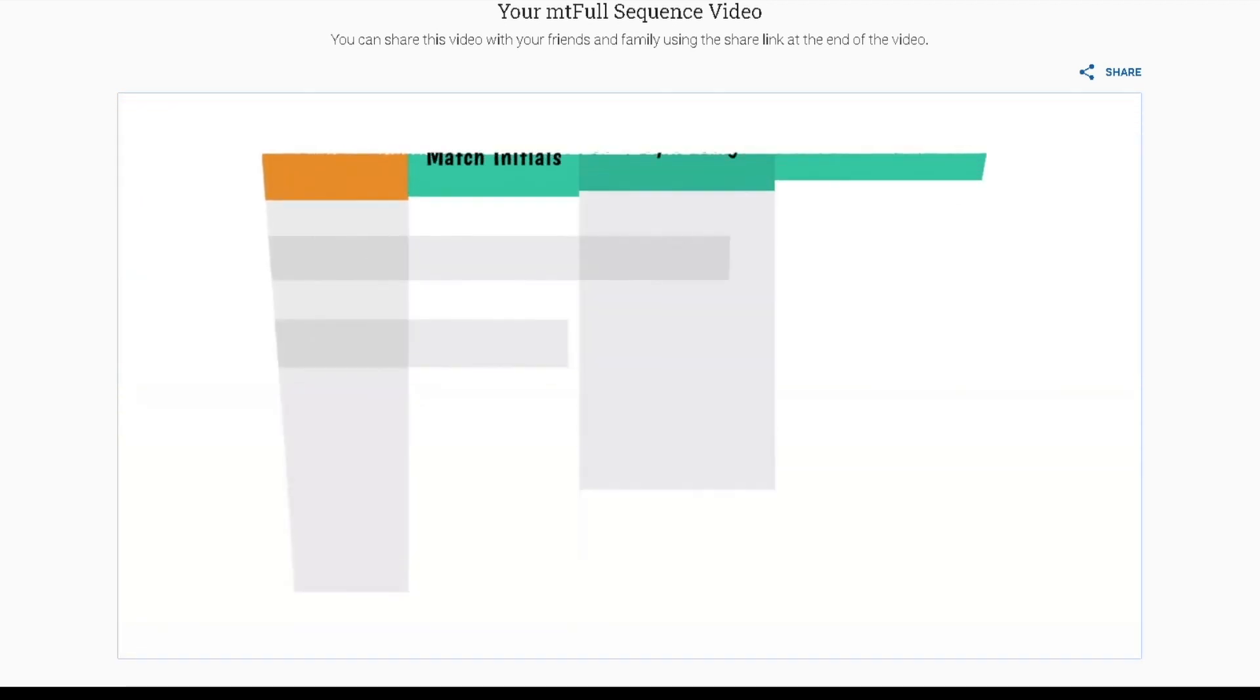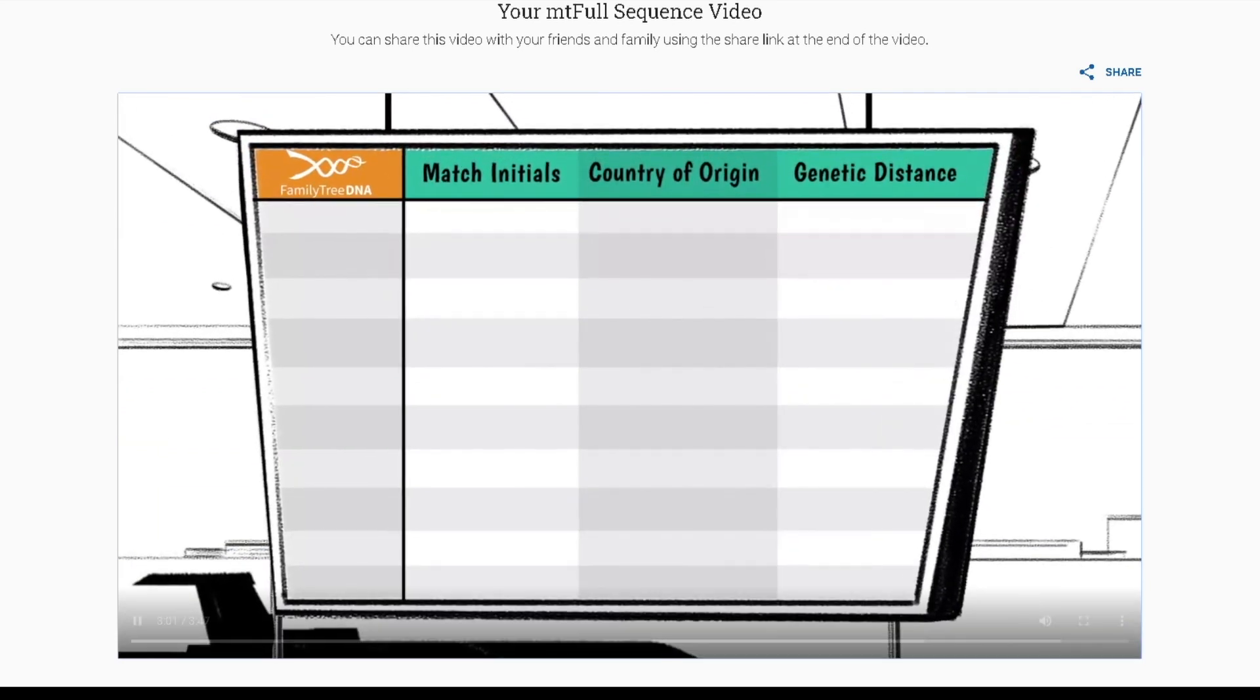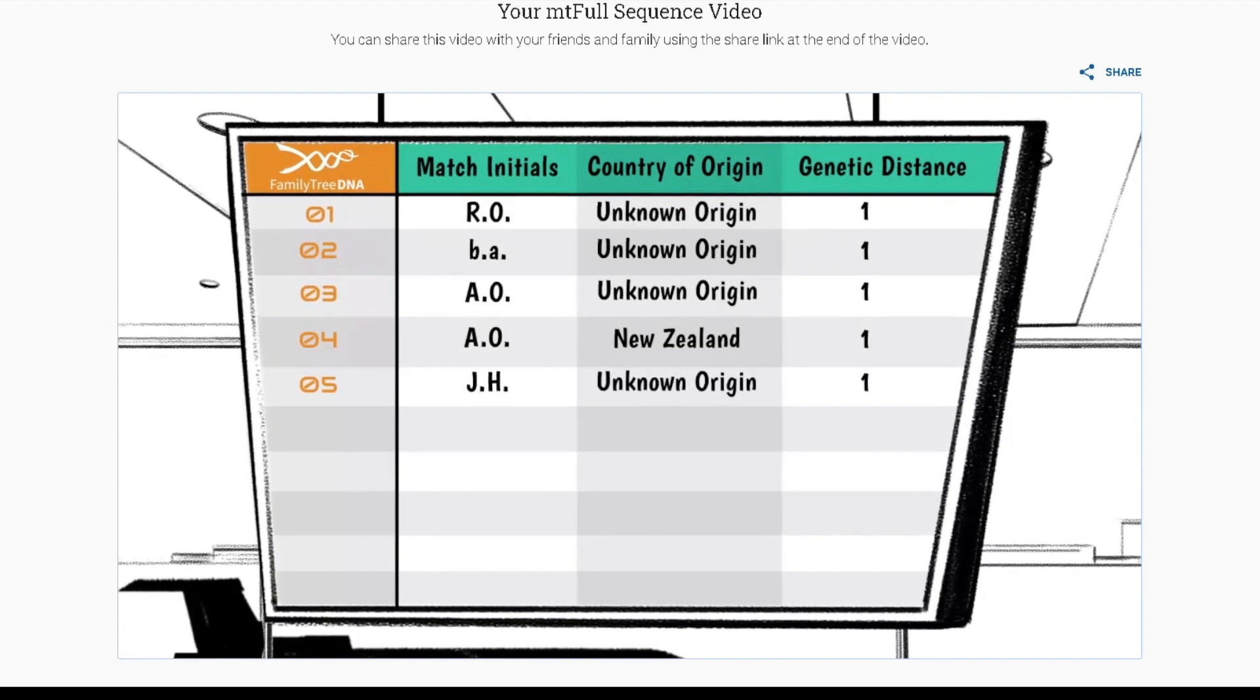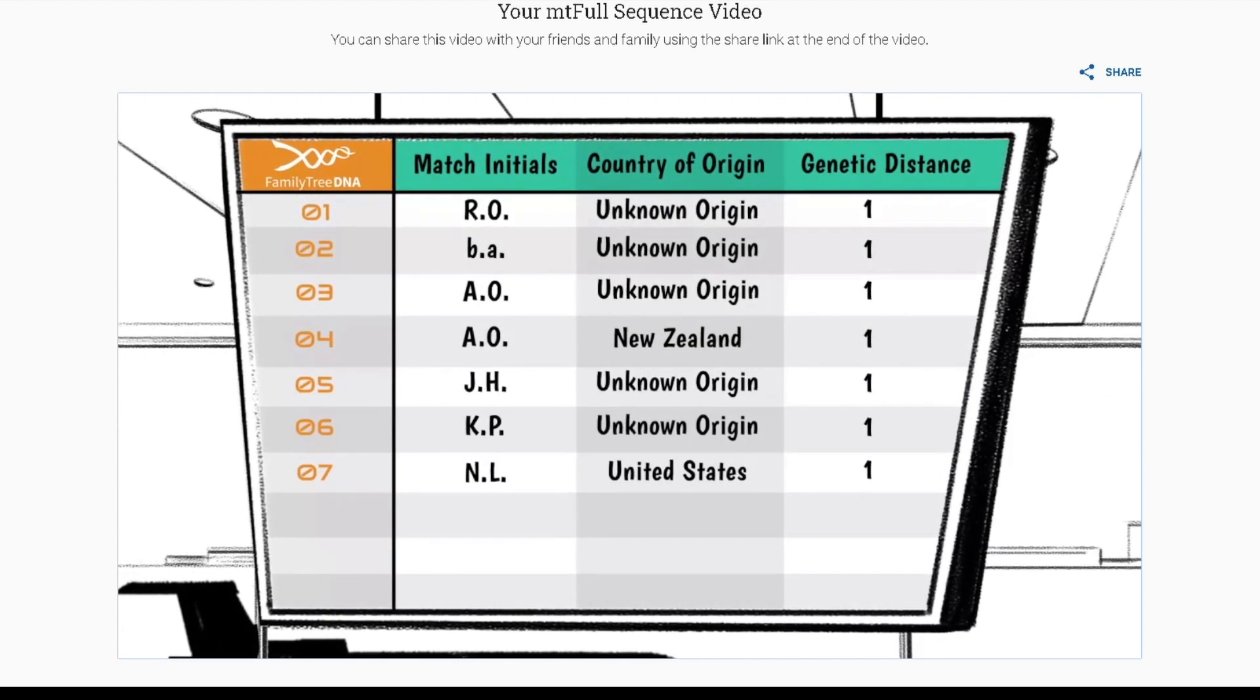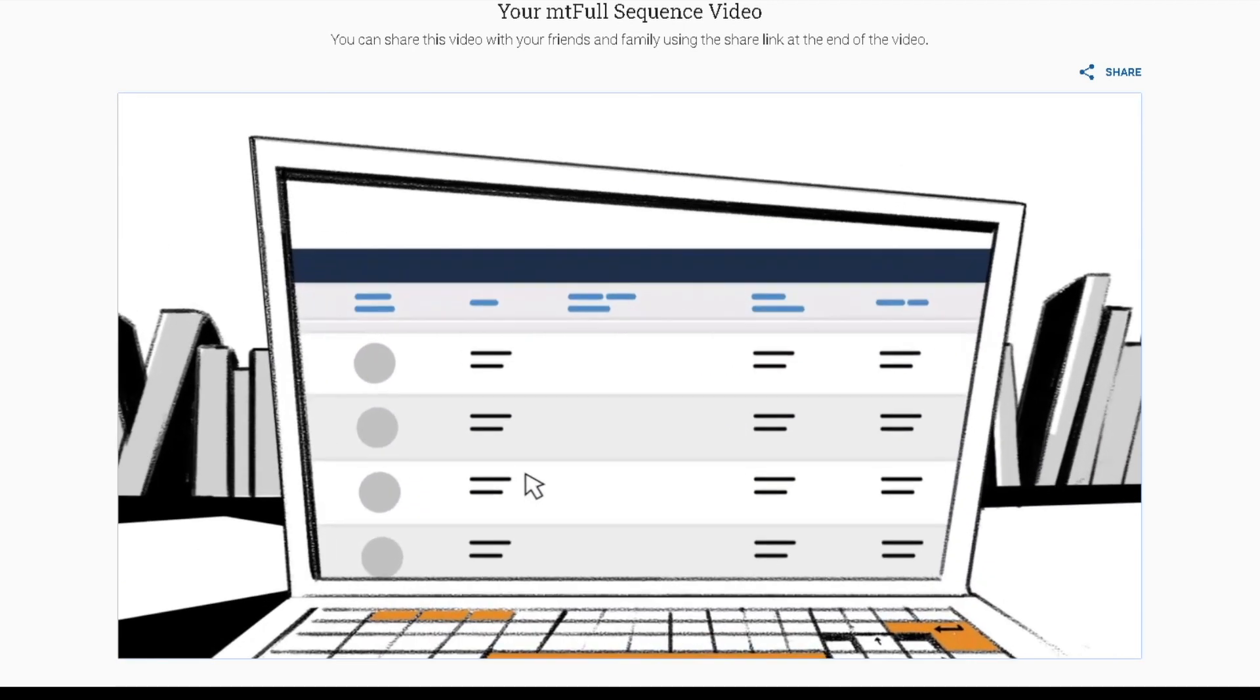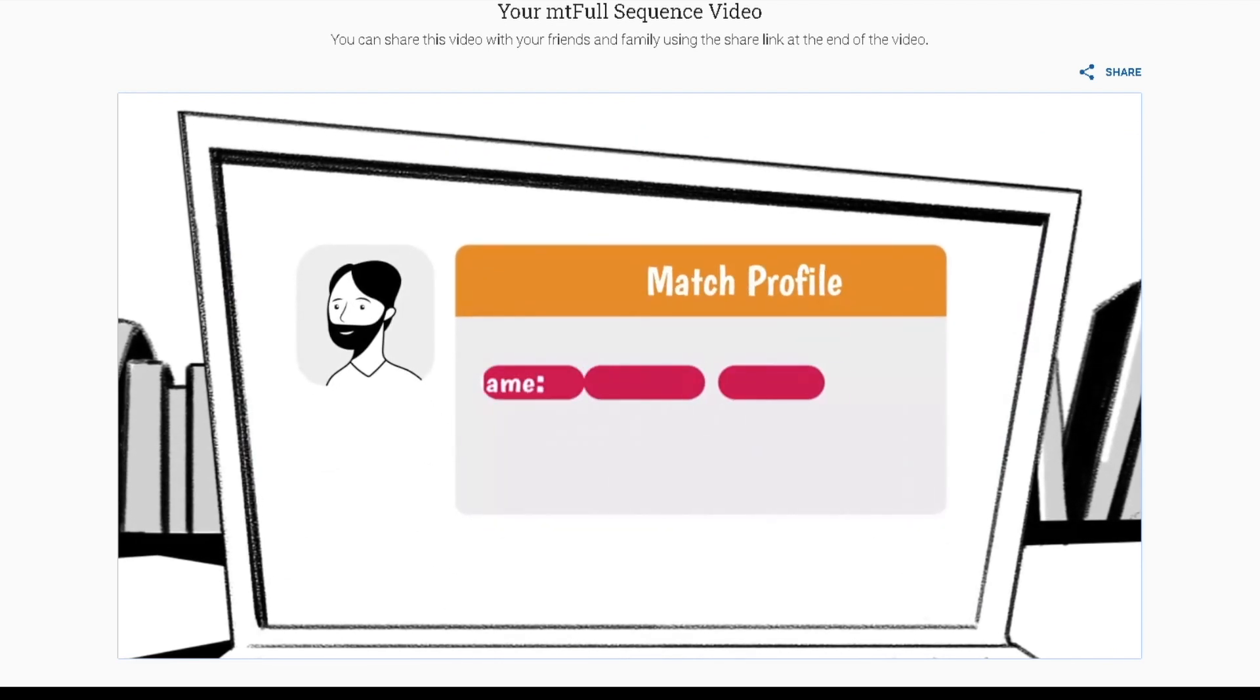We have identified your 10 closest matches: 10 individuals one step apart from you. A step is the number of mutations you differ from a match. You can even choose to connect with them. It might be the beginning of a beautiful relationship.